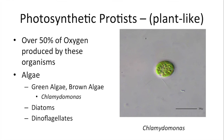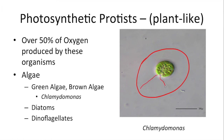This organism here to the right is a type of single-celled green algae. You can tell that it has chlorophyll and chloroplasts — that's what makes it green. And if you look really closely, you can see that it has actually two flagella that provide movement for this particular algae. This is called chlamydomonas, a single-celled algae organism.